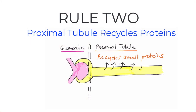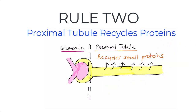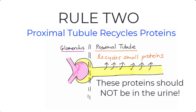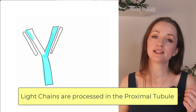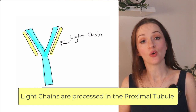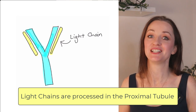The proximal tubule is a recycling and reabsorption machine. When small proteins make it into the proximal tubule under physiological conditions, they will be recycled very efficiently, and you shouldn't find them in the urine. The most clinically relevant small protein to mention here are light chains — kappa and lambda, which are components of antibodies — and under normal circumstances they are processed in the proximal tubule. Hold that thought, because we'll be returning to light chains very soon.